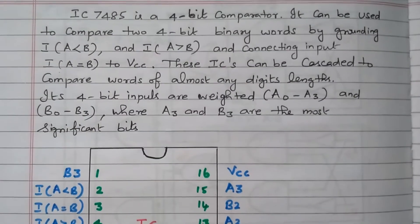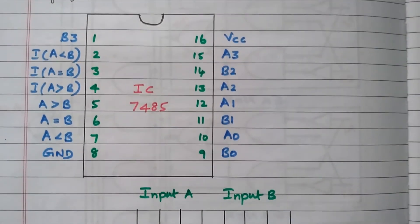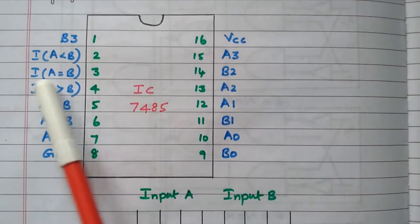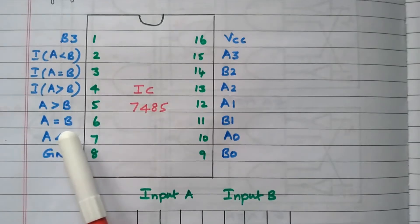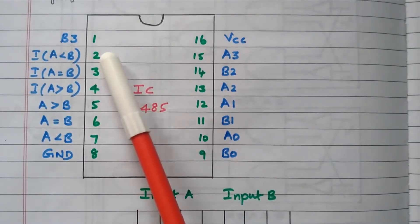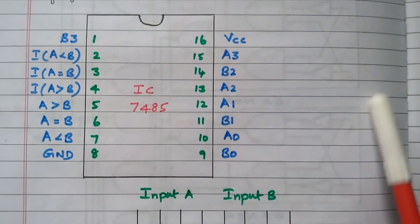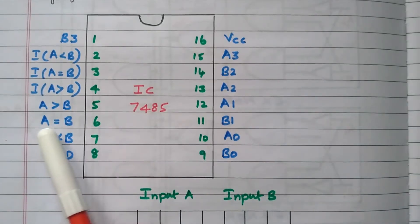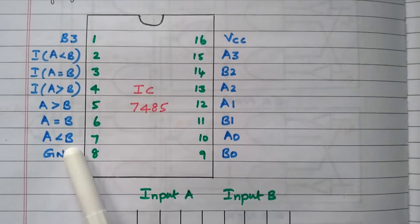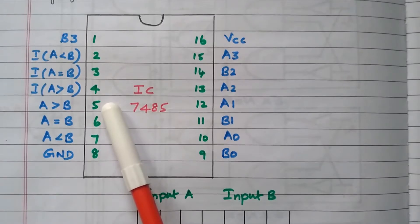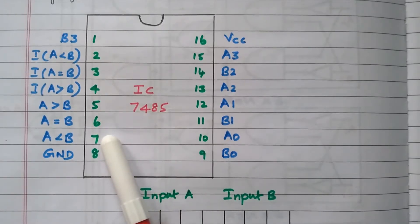Now we will see the pin diagram of IC7485. The cascade inputs we discussed — I A-less-than-B, I A-greater-than-B, and I A-equal-to-B — are at pin numbers 2, 3, and 4. Pins 2 and 4 are grounded and pin 3 is connected to VCC when using a single IC. The three outputs are: A-equal-to-B at pin 6, A-greater-than-B at pin 5, and A-less-than-B (B greater) at pin 7.